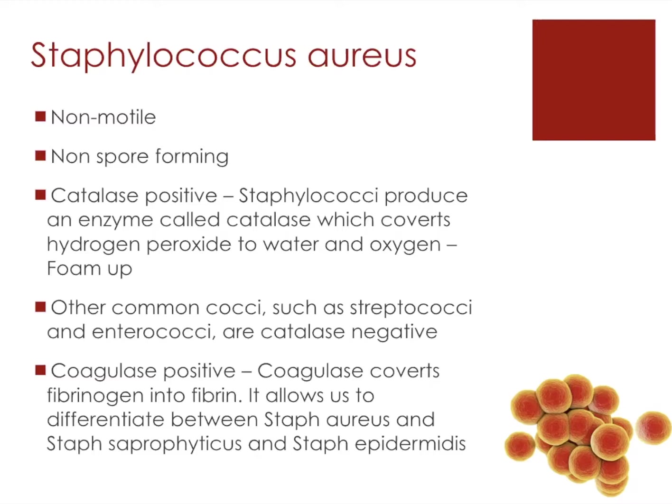Once we've done this test, we focus on whether it could be Staphylococcus aureus, Staphylococcus epidermidis, or Staphylococcus saprophyticus. To differentiate between these, we use the coagulase test, because Staphylococcus aureus is coagulase-positive — it produces coagulase, which converts fibrinogen into fibrin. We add a few drops of plasma to the emulsion, and if we see the formation of sticky fibrin, then we can confirm that Staphylococcus aureus is present.